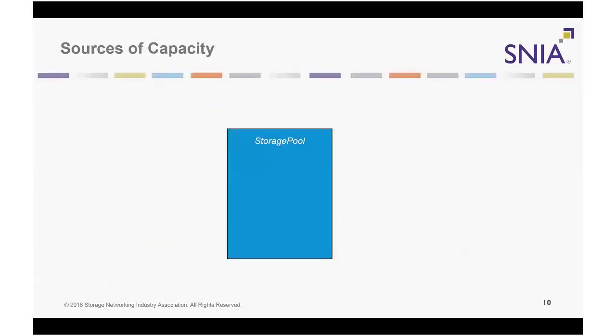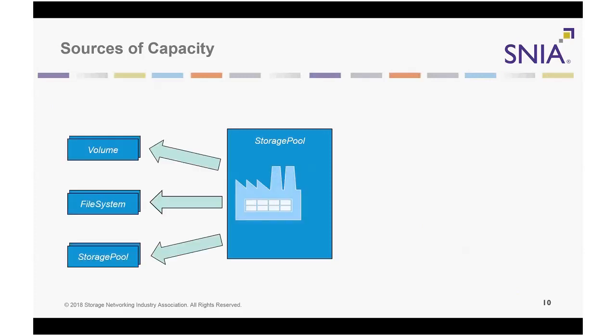A storage pool represents a factory that can produce one or more volume, file systems, or storage pool resources. Sources of storage capacity for a storage pool are represented by entries in its capacity sources array. The capacity is used to produce storage resources. Capacity sources arrays also appear in volumes and file systems. The sources of capacity are not required to be of the same type as or co-located with the resources that the storage pool creates. Storage pools are not in the data path to storage controllers or devices. The algorithms for consolidating different sources of capacity into a single volume or file system in real time are the responsibility of controllers or other data path implementations, not the storage pool itself.